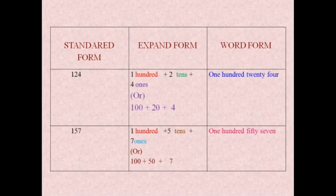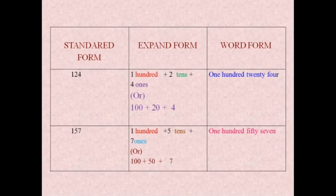This is the standard form. The expanded form is: 100 plus 20 plus 4. For example, 100 plus 50 plus 7 in word form gives 157.